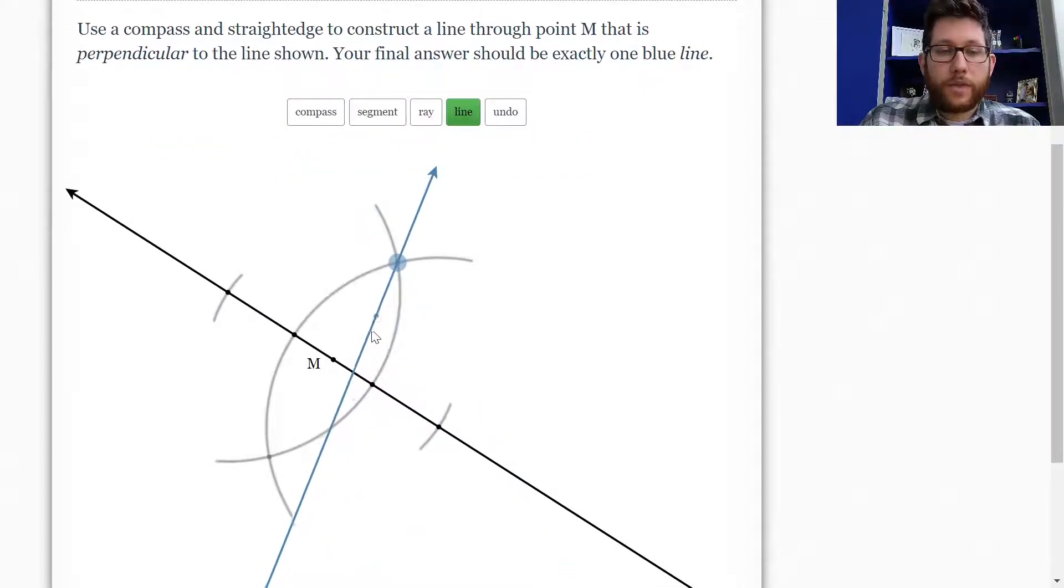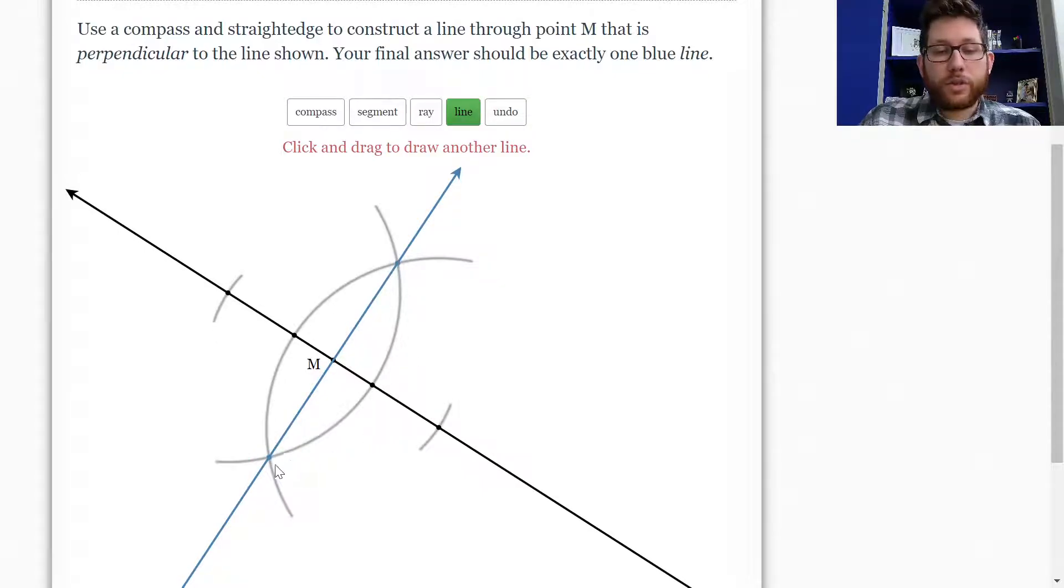Notice that the final answer should be exactly one blue line. We're going to choose our line tool and go from this point here down through that point there. You actually don't need to make crossing marks on top and bottom. You could just make one crossing mark and go through your endpoint here. Either way works - you could do both marks and put the line through both crossing marks, or just do one and go through M to that point.